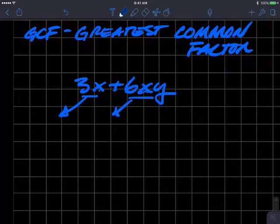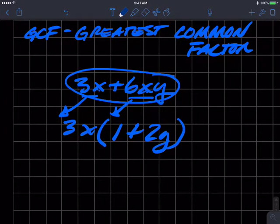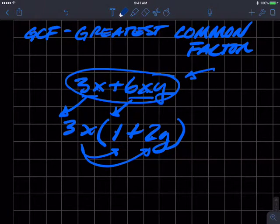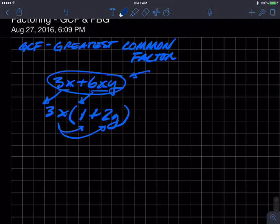So we can factor out or divide each term by 3x, but for this expression to have the same value, or to be equivalent, this term will have to be 1, and this one would have to be 2y. So in other words, 3x times 1 is 3x. 3x times 2y is 6xy. So when I multiply or distribute this, it will become that.